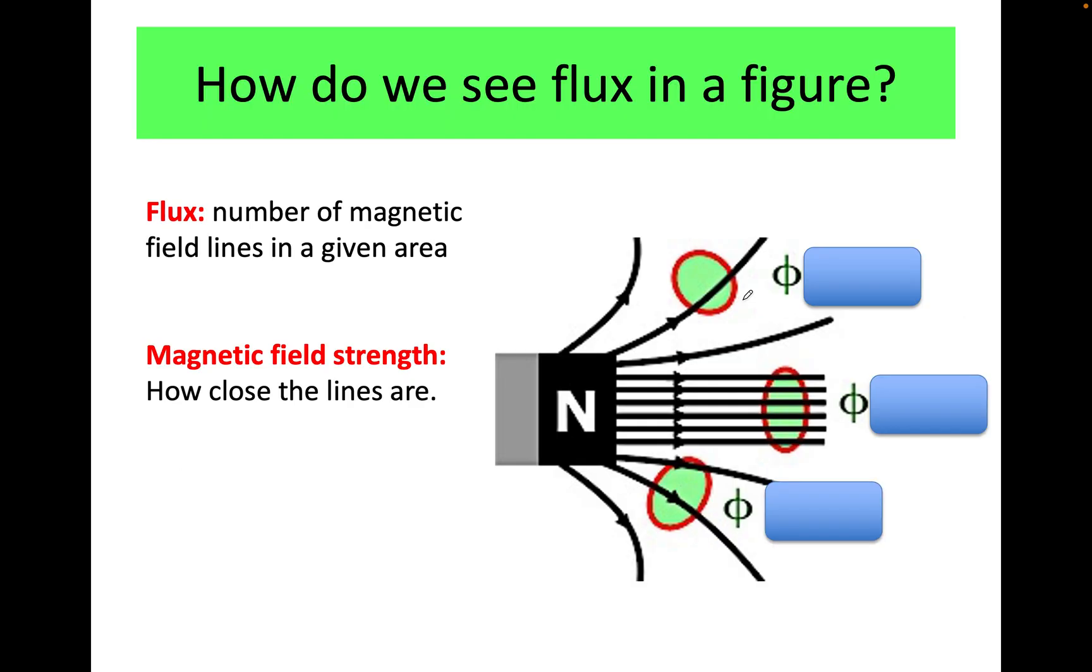If you wanted to see flux in a figure, it would look something like this. Flux is the number of lines passing through an area. I can choose an area. If I have chosen this, I have one line entering, one line leaving. Check this one, I have many lines entering. In this one, I only have two lines entering. Low flux, high flux, medium flux. It's all relative.